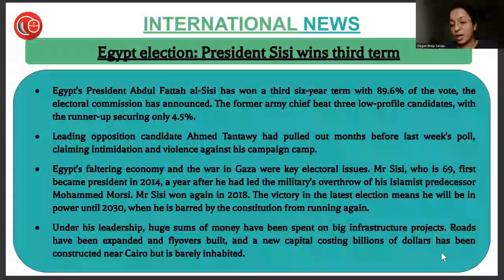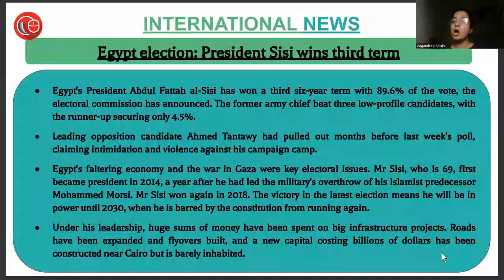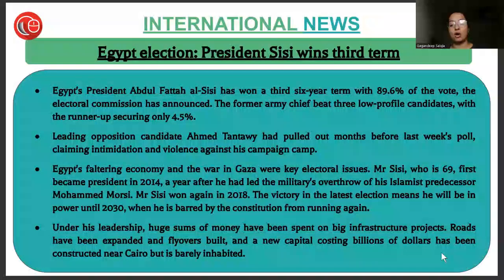In international news, Egypt's President Abdel Fattah el-Sisi has won a third six-year term with 89.6 percent of the vote. His leading opposition candidate Ahmed Tantawi had pulled out months before the poll, claiming intimidation and harassment against his campaign. Under Sisi's leadership, huge sums of money have been spent on infrastructure projects — roads have been expanded, flyovers built, and a new capital costing billions of dollars has been constructed near Cairo, though it remains barely inhabited.